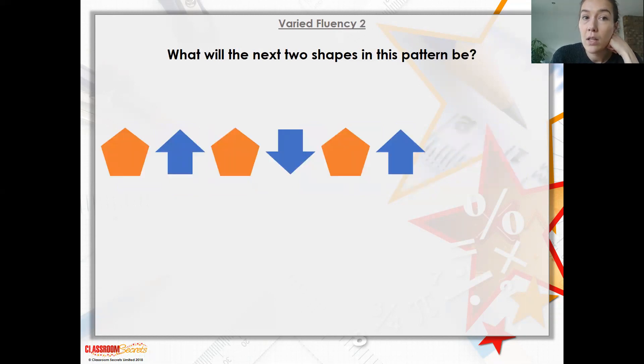What will the next two shapes on the pattern be? So what is this shape here? Just recapping, it's got one, two, three, four, five sides. Yes, it is a pentagon. And then continuing that pattern correctly.